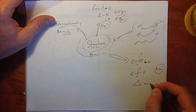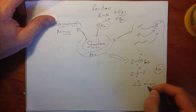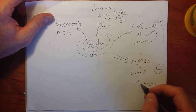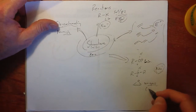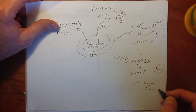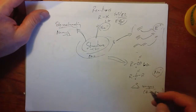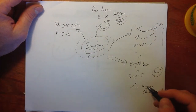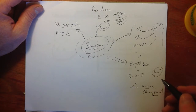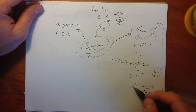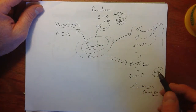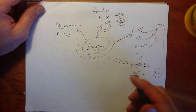Epoxides were unique in that they can react without acids because of their ring strain. So we said both in acid or in base conditions, because of the ring strain, epoxides can react with strong or weak nucleophiles — they can pop open in acid or base conditions.